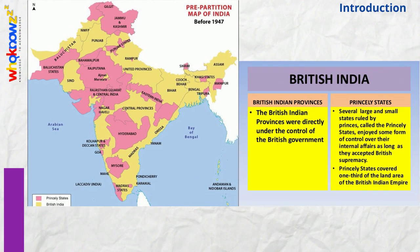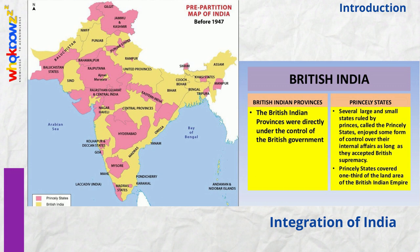We hear more about partition of India than the integration of India. Jammu and Kashmir is the story of integration. At the time of Indian independence in 1947, India was divided into two sets of territories: one under direct British rule and the other under the suzerainty of the British crown — the 562 princely states, with control over their internal affairs remaining in the hands of their hereditary rulers.